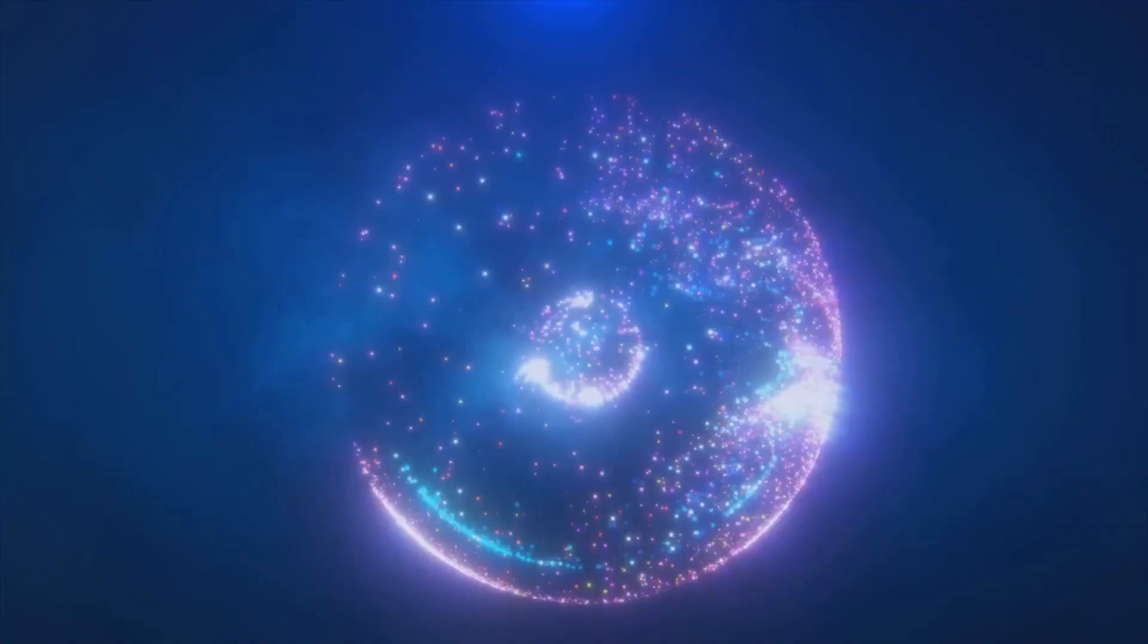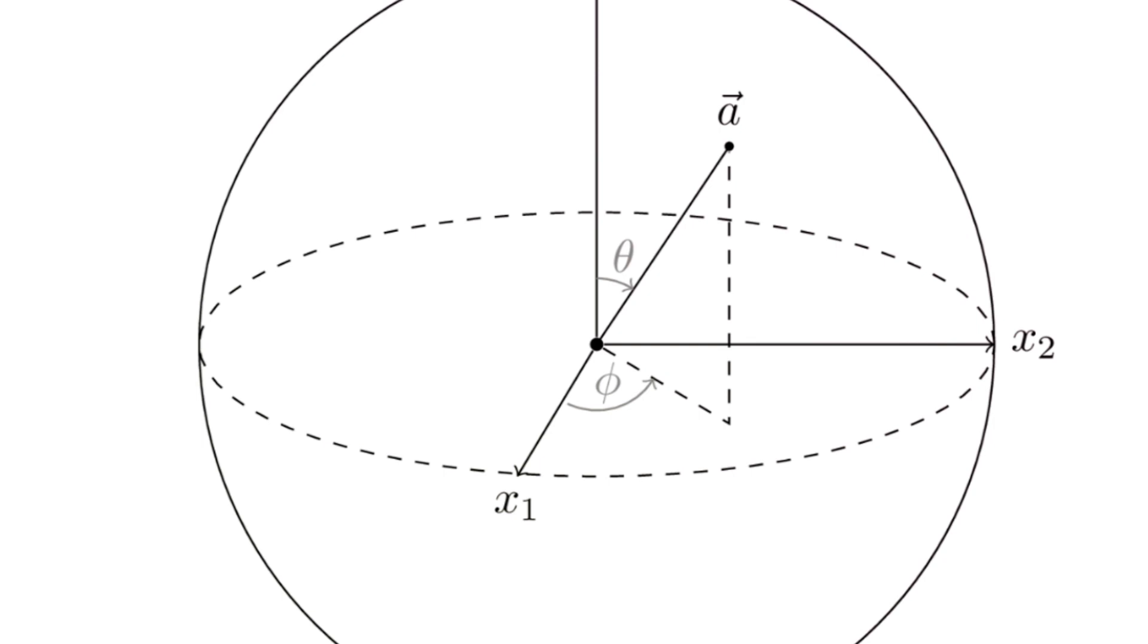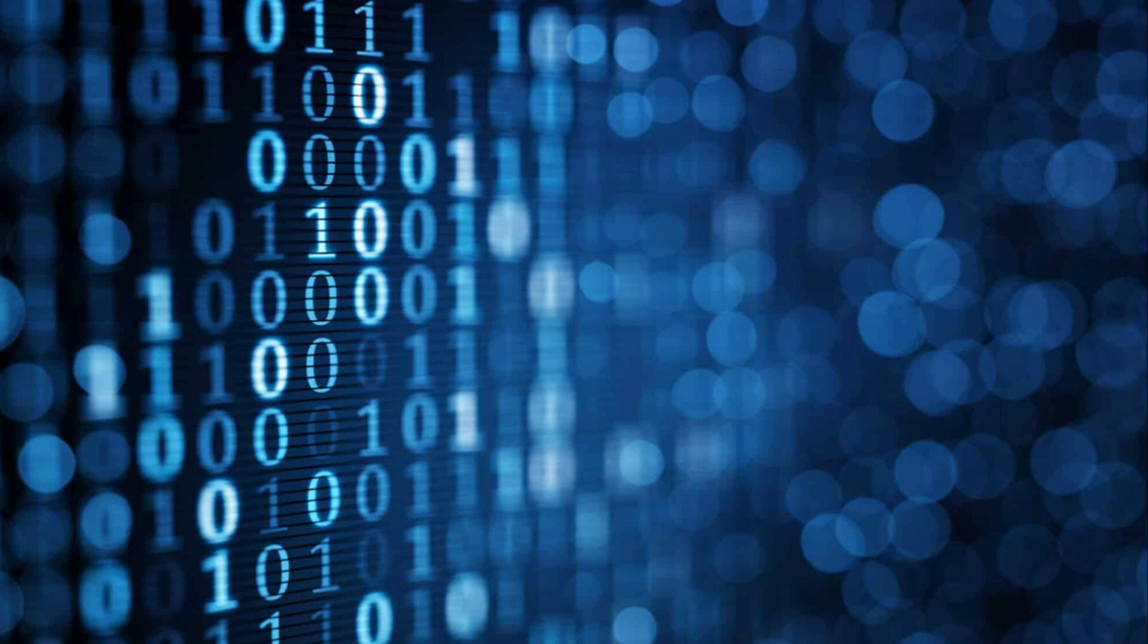And this is where the Bloch sphere truly shines. The surface of the Bloch sphere visually represents the state of a qubit in superposition. Think of a vector or an arrow pointing from the center of the sphere to any point on its surface. This vector represents the state of the qubit, a blend of zero and one states.